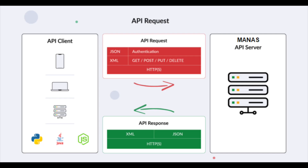Generally speaking, the workflow of the API is as shown in the chart here. The user will send an order to the corresponding service from a terminal integrated with the API. The terminal will send a request to the API server, and the server will make a response and send feedback back to the user.